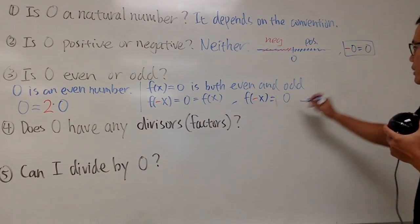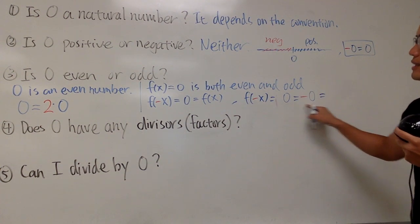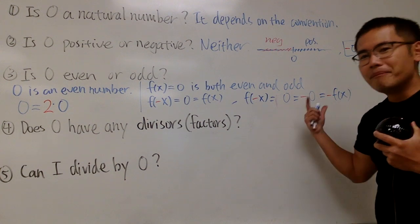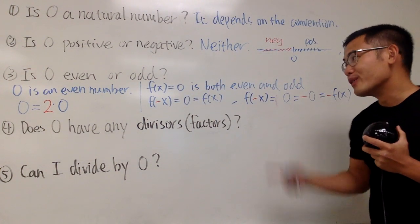But we know 0 is equal to negative 0, and of course 0 is f of x, so we can write this as negative f of x. And because of this, it makes this an odd function.